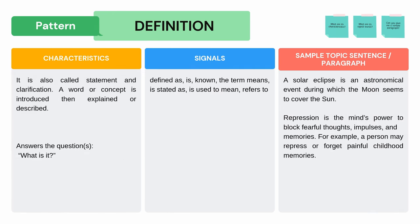Next is Definition, also called statement and clarification. A word or concept is introduced then explained or described. It answers the question: What is it? Sample paragraphs: A solar eclipse is an astronomical event during which the moon seems to cover the sun. Repression is the mind's power to block fearful thoughts, impulses, and memories. For example, a person may repress or forget painful childhood memories. Do you notice any signal words that tell you the sample paragraphs are definition? Pause the video and look at the signal words.